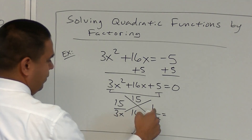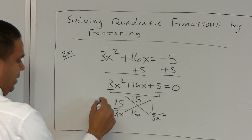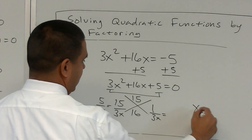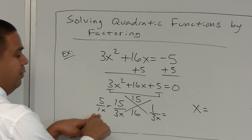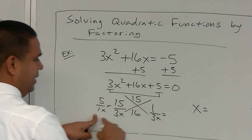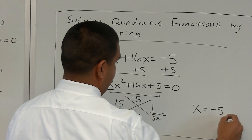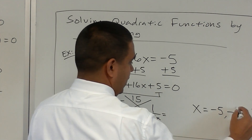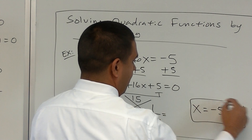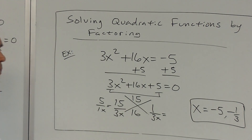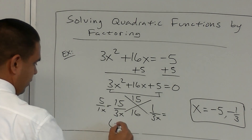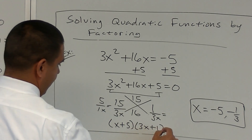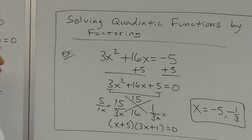So the factors give solutions: using the shortcut, the opposite of 5 is negative 5, and the opposite of 1/3 is negative 1/3. Of course we could also write out the full factors and solve from there to get the same answers. Questions up to there?